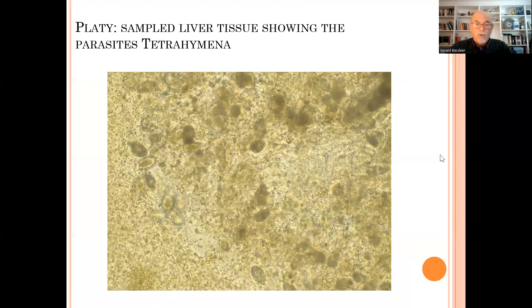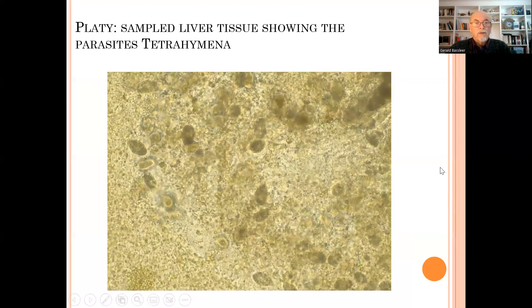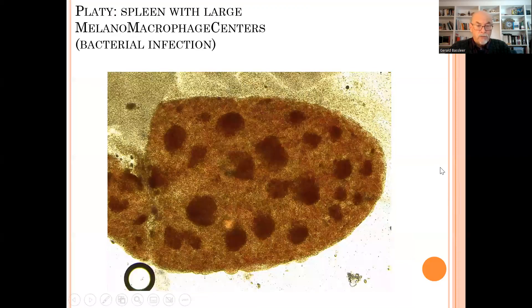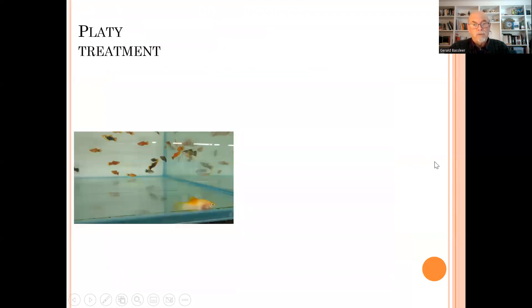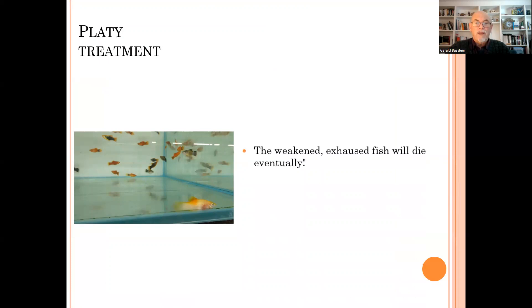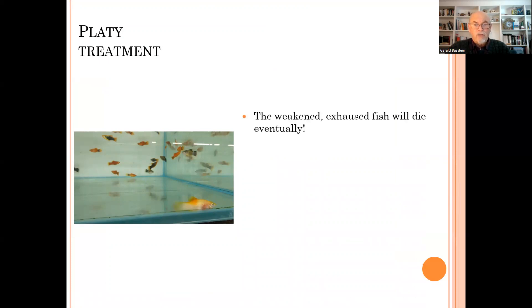Here we see them in much higher magnification — that's just causing serious damage. That fish will not last very long. You also find that the spleen had large melano-macrophagic centers, which is a reaction to a bacterial infection, and you can see that the spleen is not functioning either.